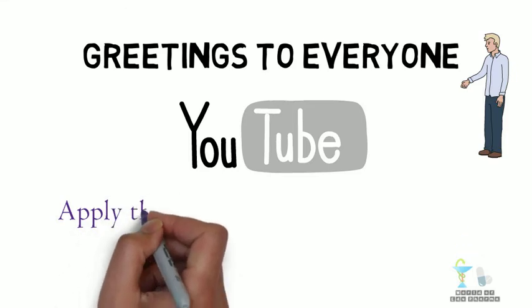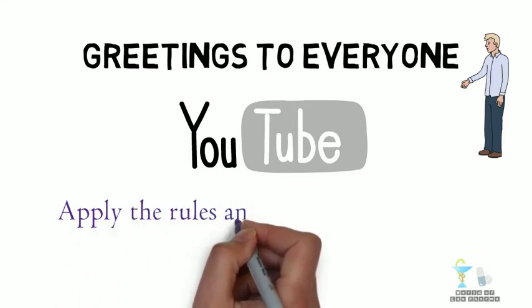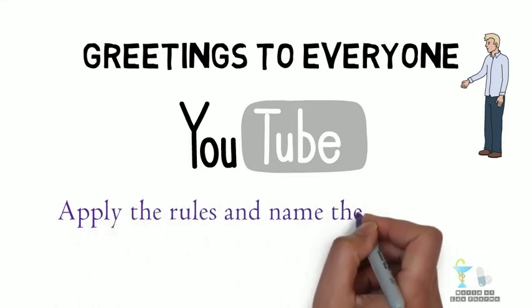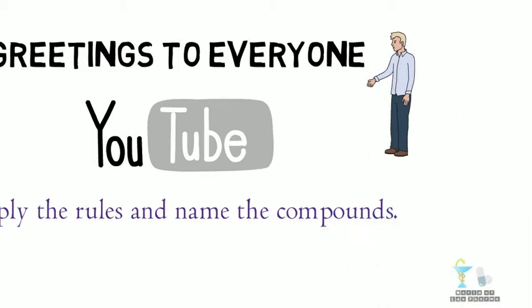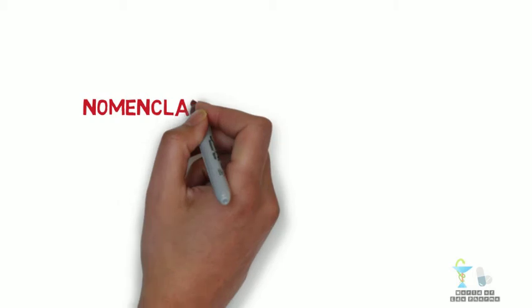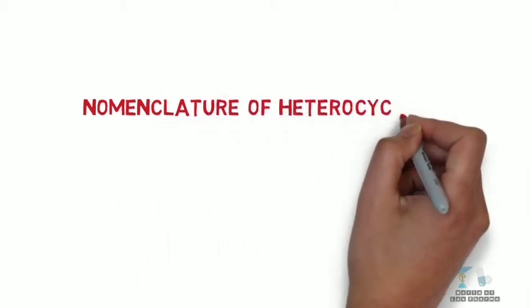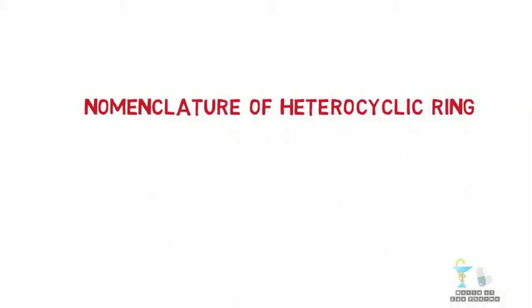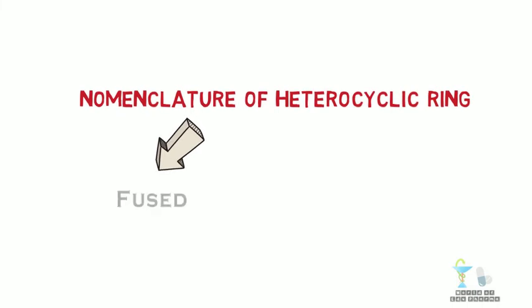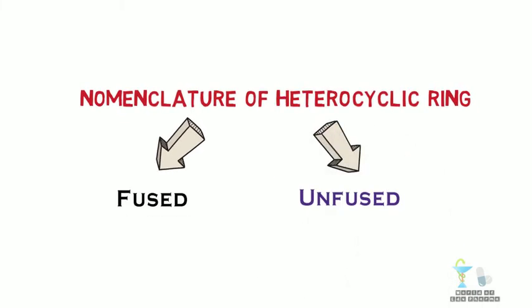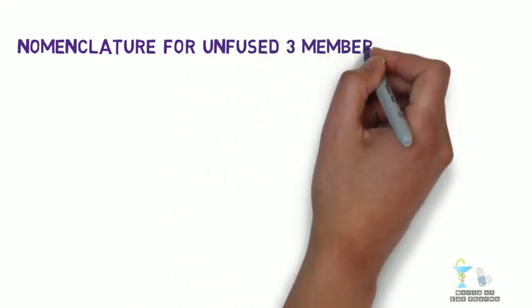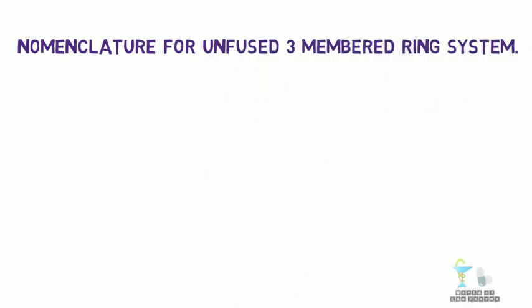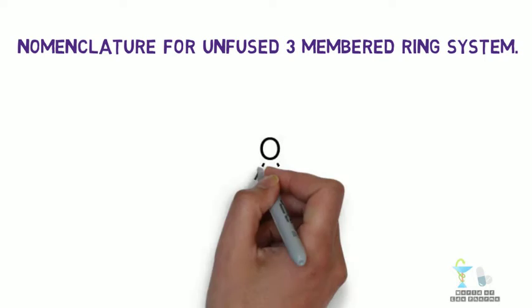In this part, we can apply the rules of nomenclature that we have seen in the last session and name the compounds accordingly. The nomenclature of the heterocyclic ring is based on the type of ring, whether it is fused or unfused. Now we can see the nomenclature for unfused three-membered ring system.